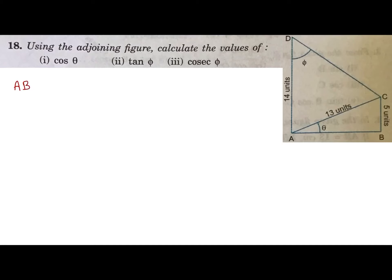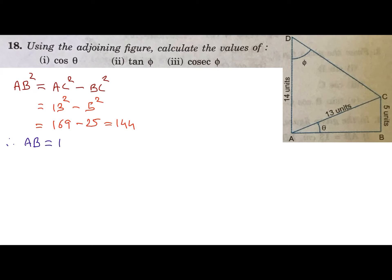Here are a few questions of trigonometric ratios using the adjoining figure: calculate the values of cos θ, tan φ, and cosec φ. We have a right triangle ABC. Using Pythagoras theorem to find the third side AB: AB² = AC² - BC². Calculating, we get AB² = 144, so AB = 12 units. Therefore, cos θ is the ratio of adjacent side AB upon hypotenuse AC, that is 12 upon 13.